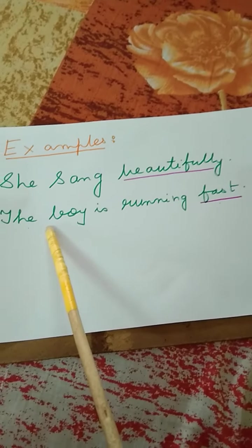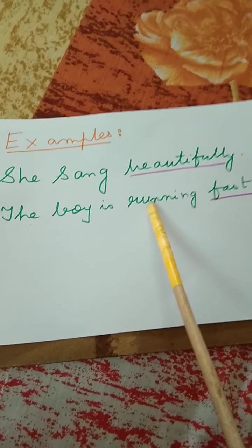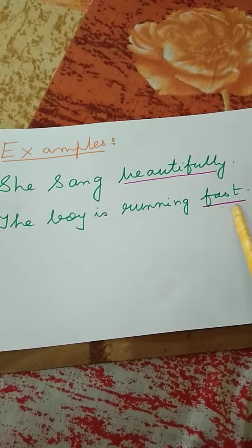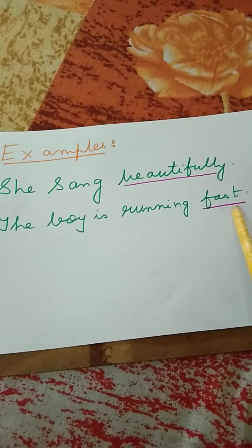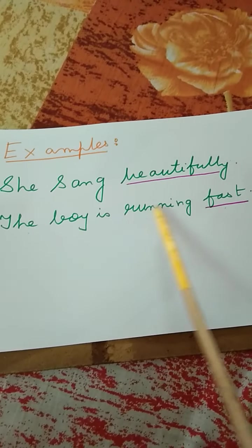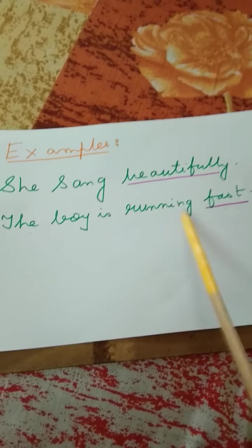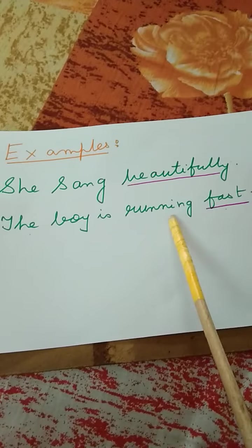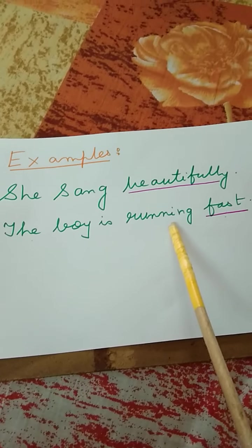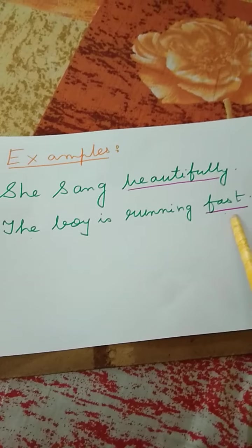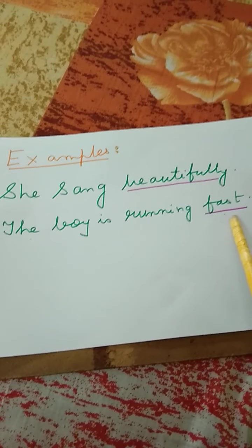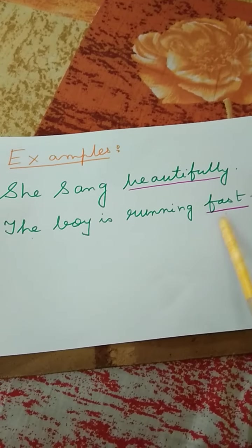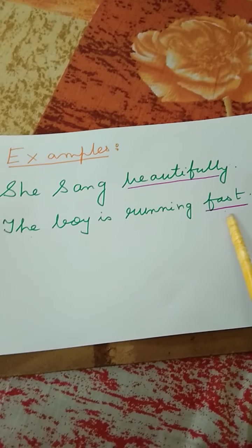Now see the next sentence: the boy is running fast. 'Running' is an action word, that is the verb. I am saying 'running fast,' meaning I am saying something about how the boy is running — about the speed. So I am saying something extra, something more about the verb 'running.' So 'fast' is the adverb.